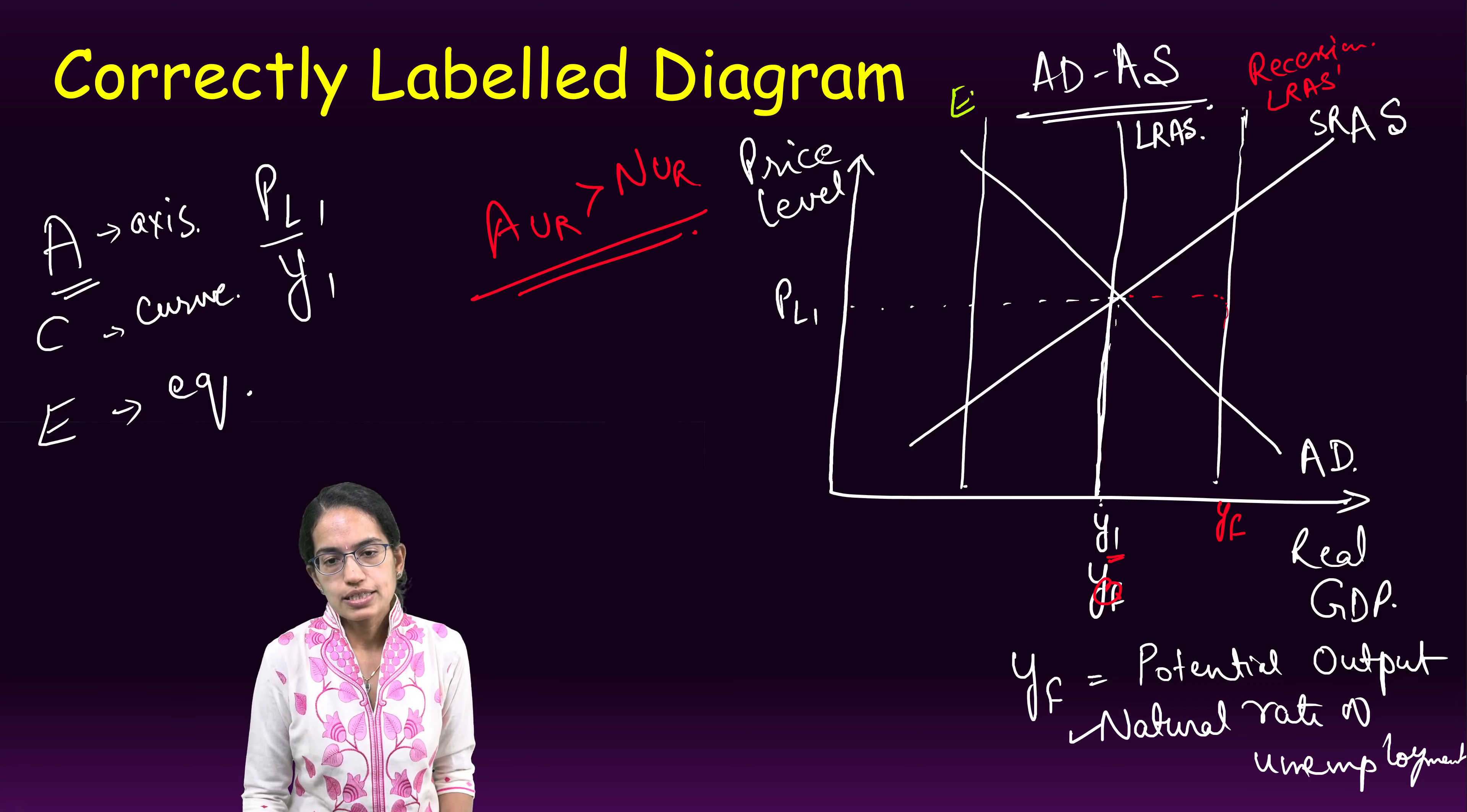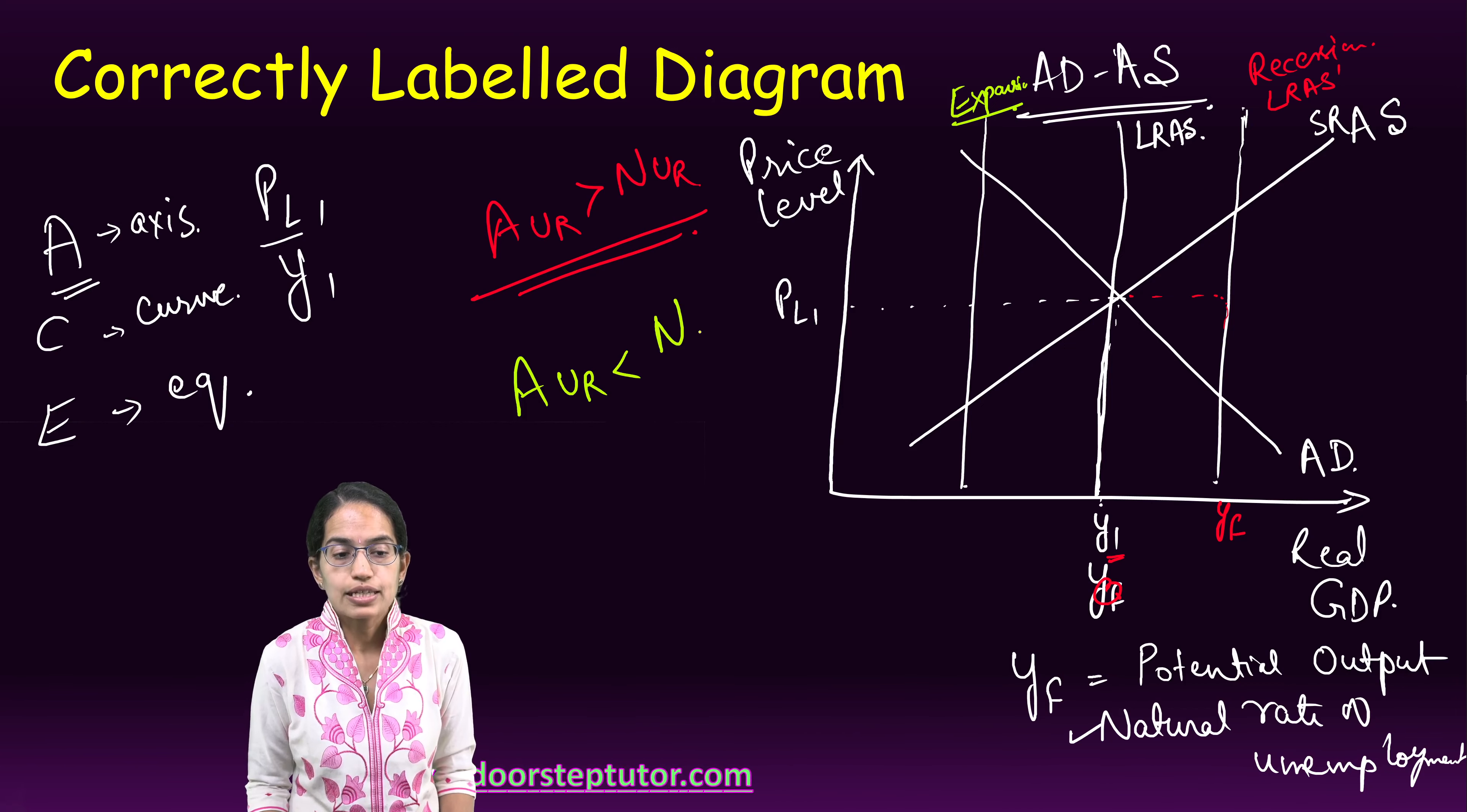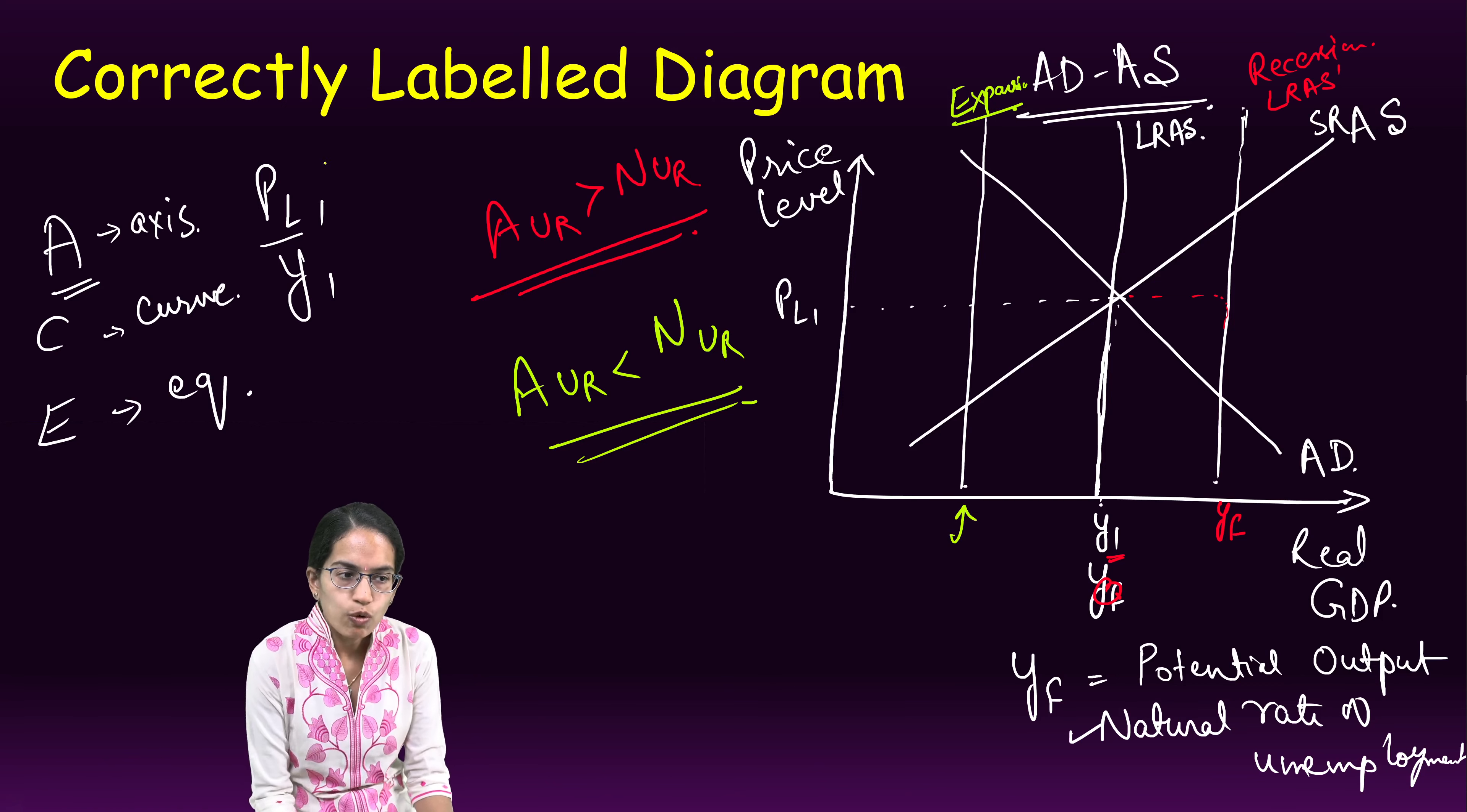The other case is an expansionary cycle. Under an expansionary cycle, my actual rate of unemployment would be less than the natural rate of unemployment, and that's again the case of an expansionary cycle.